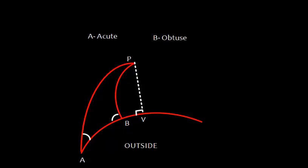Now if A is acute and B is obtuse, obtuse means more than 90 degrees. The vertex in that scenario will lie outside and it will be close to the obtuse angle.